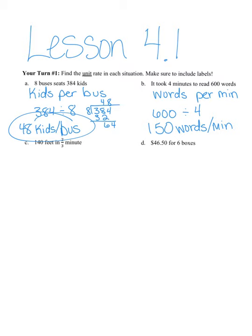In part C, we've got 140 feet in two-thirds minute. What I'm wanting to find here is the amount of feet per minute.